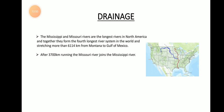Now let's move on to the drainage system of North America. Drainage means the river waters of a country — how they flow and where they end up. The Mississippi and Missouri rivers are the longest rivers in North America, and together they form the fourth longest river system in the whole world.